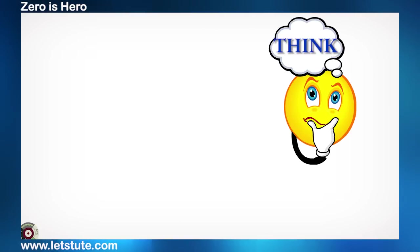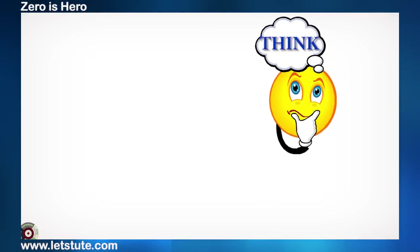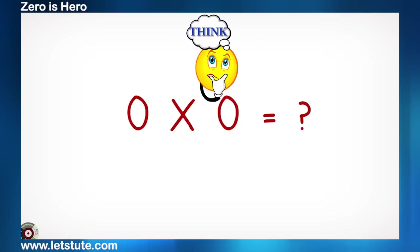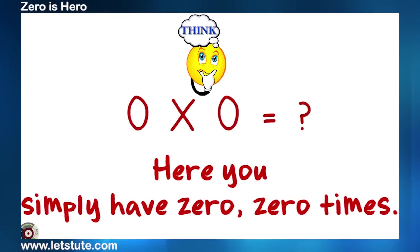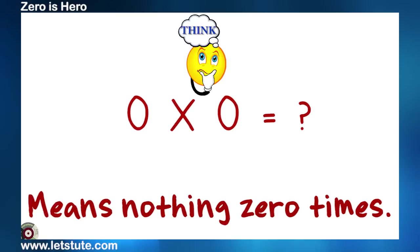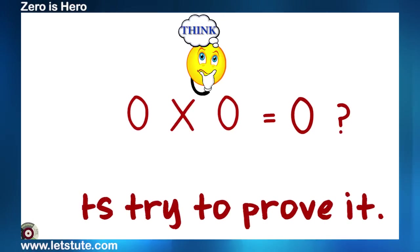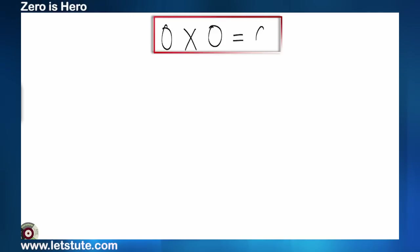Now, just think, what if we multiply zero with zero itself? Well, here you simply have zero zero times. Means nothing zero times. Okay, let's try to prove it. We have to prove that zero into zero is zero. So, let's take the left hand side that is zero into zero and we can write zero as one minus one, right?